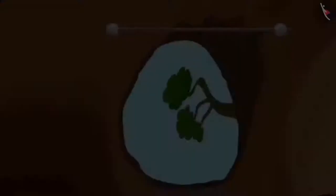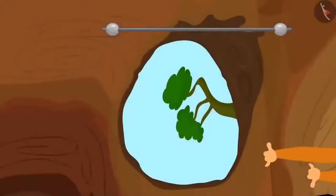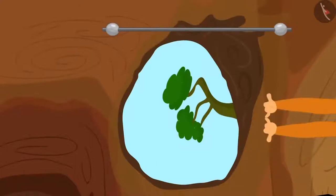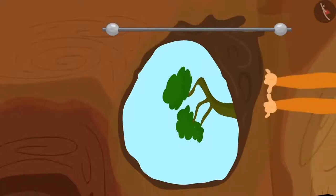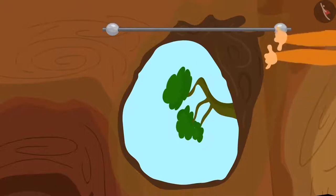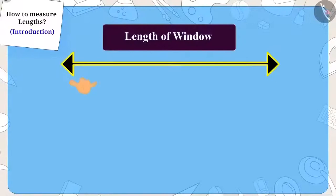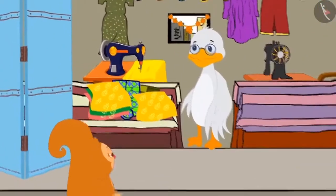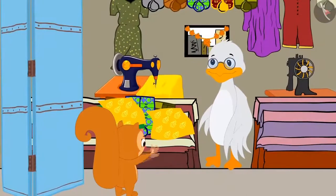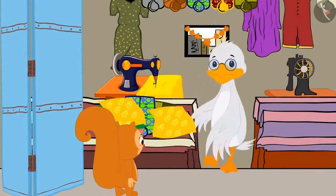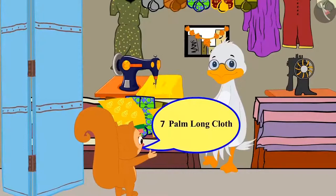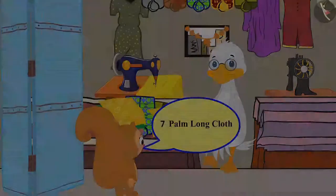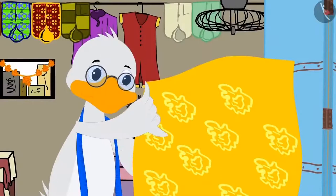Chanda thought of measuring the length of the window with her palm. She quickly measured the length of the window using her palms. The length of the window is equal to seven of Chanda's palms. Chanda reached uncle's shop all excited, chose a material, and asked uncle to give her a seven-palm-long cloth. Uncle immediately measured and gave it to her.